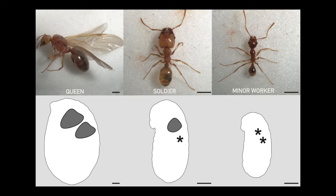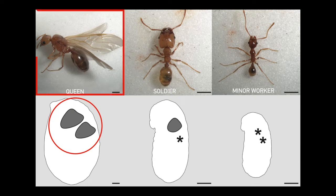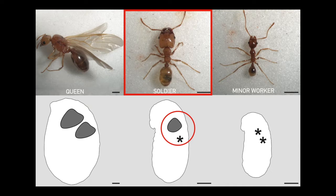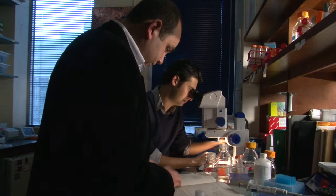It seems that the answer is to be found in an organ called a rudimentary wing disc. Only the queen and the male ants have wings — none of the workers do. But Abouhev and his students observed that in some of the worker ants, a rudimentary wing disc that was thought to be simply a useless remnant of evolution appears at a particular stage in their development. In the process of looking into it more closely, the researchers made a big discovery.